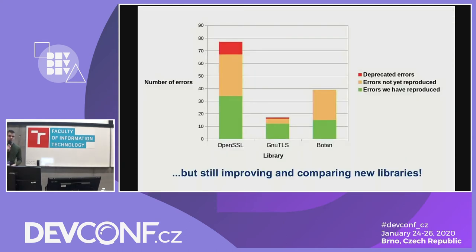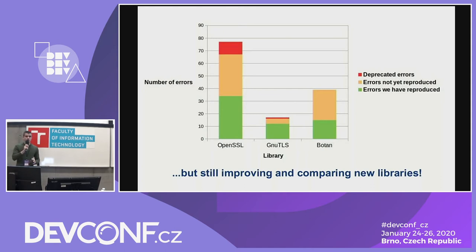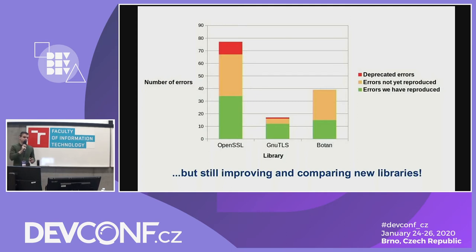From this graph you can see a few things. First, we still have a lot of work to do. We've managed to replicate almost half of the OpenSSL errors. There are currently around 77 errors in OpenSSL. Around 10 of those are marked as deprecated, so they can't really happen. We suspect there are still a few errors not marked deprecated that can't occur in the wild, so we're more like close to two-thirds with the green ones.